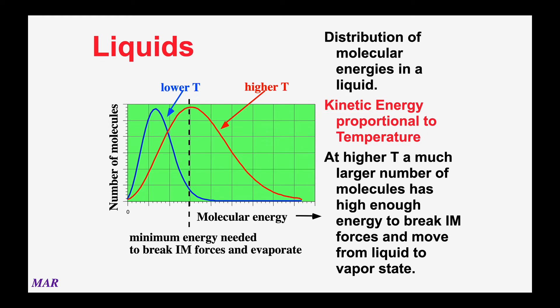Liquids, like gases, have a range of energies and those are temperature dependent. In the graph, the blue line represents the distribution of energies in a liquid at a lower temperature, and the red line represents the distribution at a higher temperature. There's also a dotted line representing the minimum energy required to turn a liquid into a gas. At the higher temperature, a much larger percentage of molecules are past the dotted line — those are the ones that can turn from liquid to gas. Most lower-temperature molecules don't have enough energy and stay as liquid, though there is a small area of lower-temperature molecules that do have enough energy.